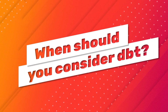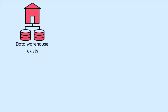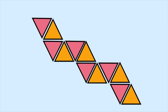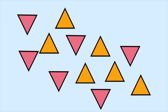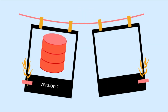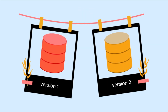When should you consider dbt? You should consider dbt when you have a data warehouse and your data pipeline is complex. dbt's modular approach can help break down complex pipelines into smaller pieces, making it easier to debug, test, and make changes to your pipeline. You should also consider it when your data changes frequently — dbt's snapshot feature allows you to track changes in data over time.